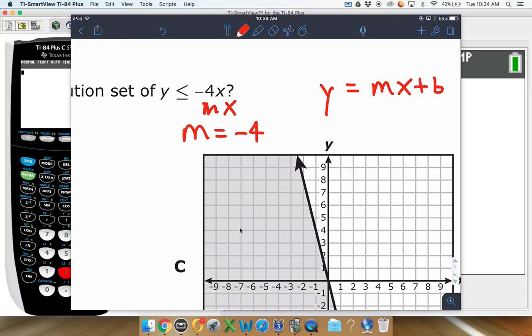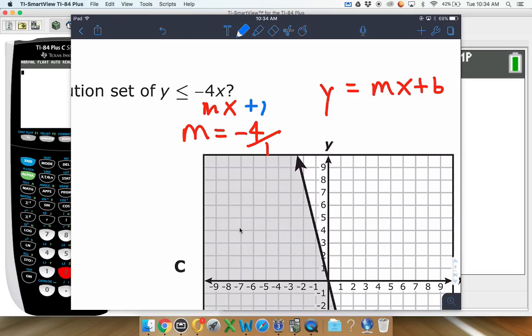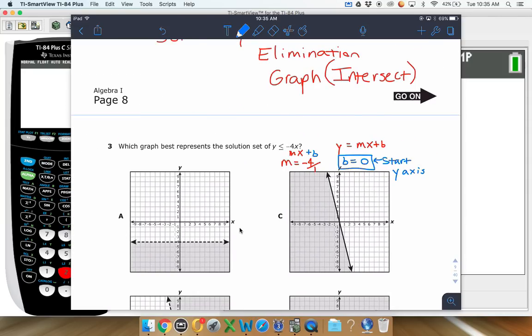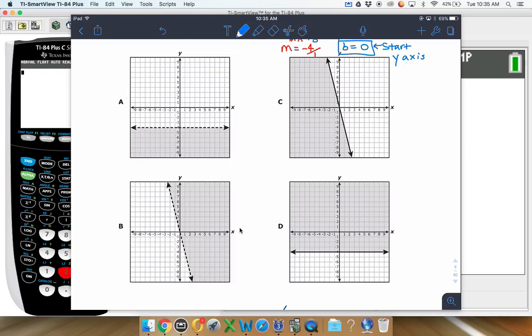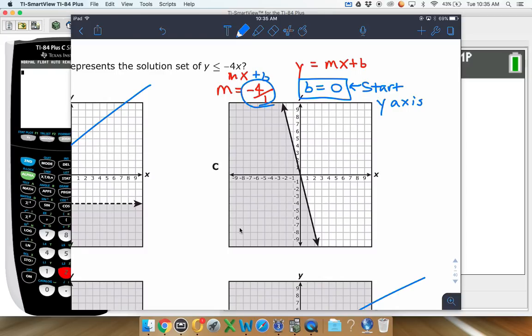So in this case here, here's our mx right there. That means m, or the slope, is negative 4. That's also like saying the slope is negative 4 over 1. As far as the b, we don't really have a b value. In this case, the b is actually 0. The b is where you start at. So we're going to start at 0. Make sure you start on the y-axis. In this case, if we're starting at 0 on the y-axis, we can already eliminate option A and option D.